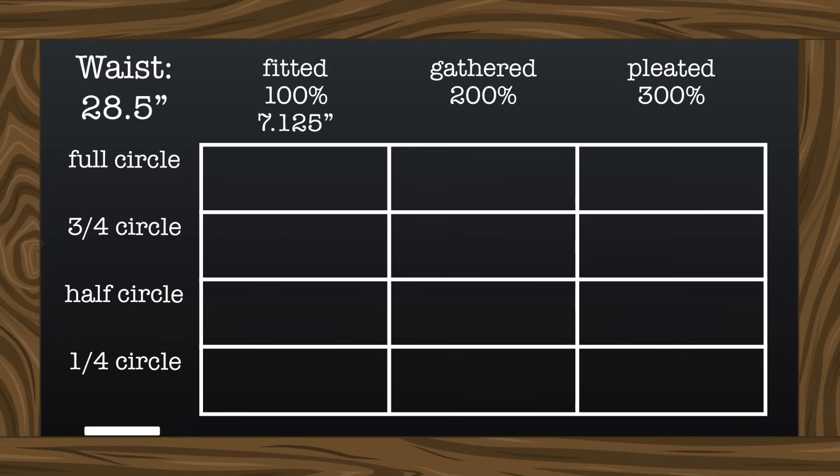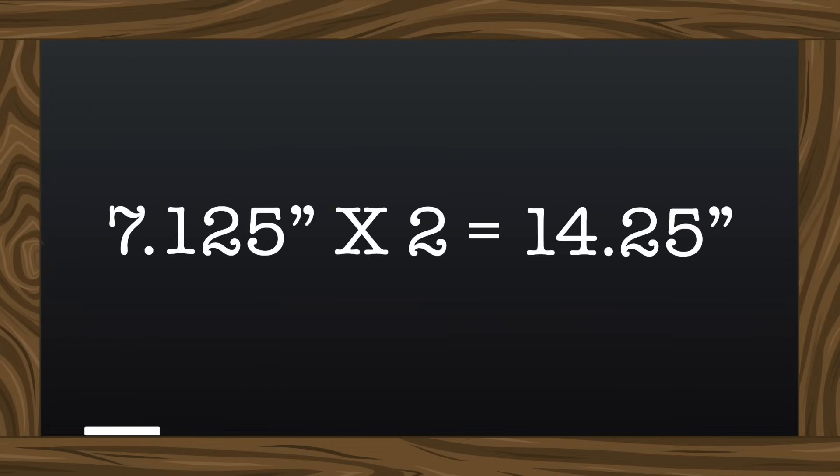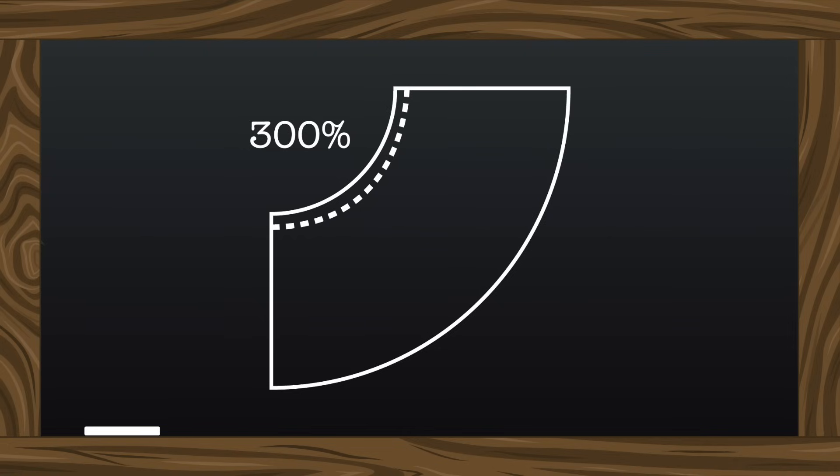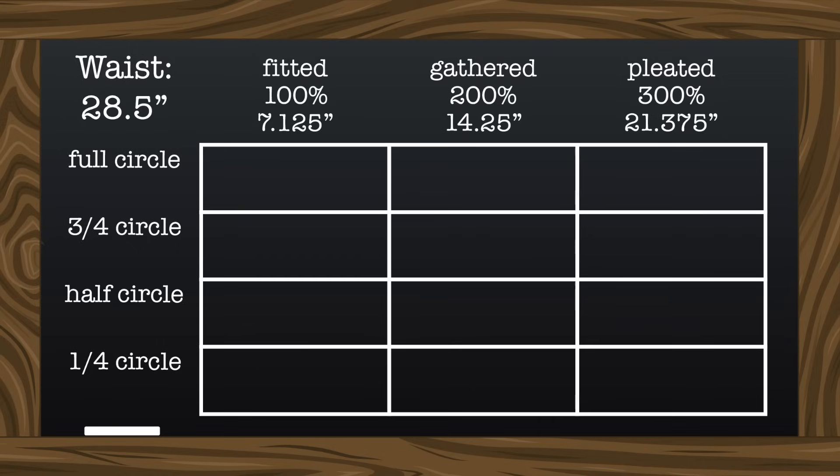Using this, we can go ahead and mark the other two columns. For the gathered skirts with a 200% waist measurement, we need to double that for a 14.25 inch curve. And the pleated skirts with a 300% waist measurement will need a 21.375 inch curve. Got it so far? Good.